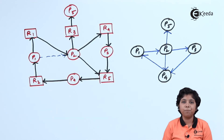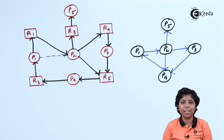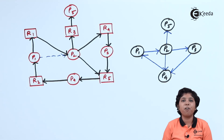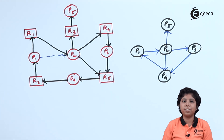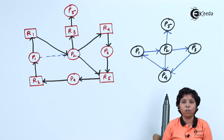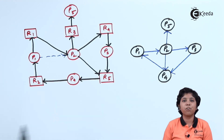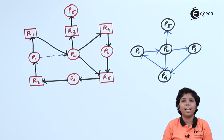The system will be in a deadlock state if and only if the wait-for graph contains a cycle. We need to maintain the wait-for graph and invoke an algorithm periodically to check whether a cycle has occurred. The cycle detection algorithm uses O(n²) operations, where n is the number of processes. As we can see in both the resource allocation graph and the wait-for graph, a cycle exists, meaning this system is in or may enter a deadlock state. Single-instance deadlock can be detected using the wait-for graph and recovered using cycle detection.